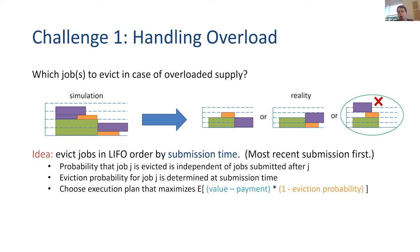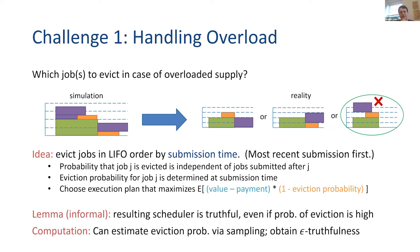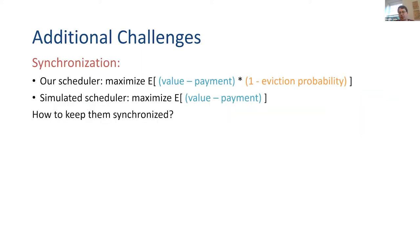We know the eviction probability at the point in which this job is submitted, which means the scheduler can take it into account. We actually modify the scheduling rules slightly to take these eviction probabilities into account, and this lets us get good incentives even in this world. This causes some funny synchronization issues because now we're doing something slightly different from the fractional world, and a lot of the technical part of the paper is trying to make sure that these things stay in sync.